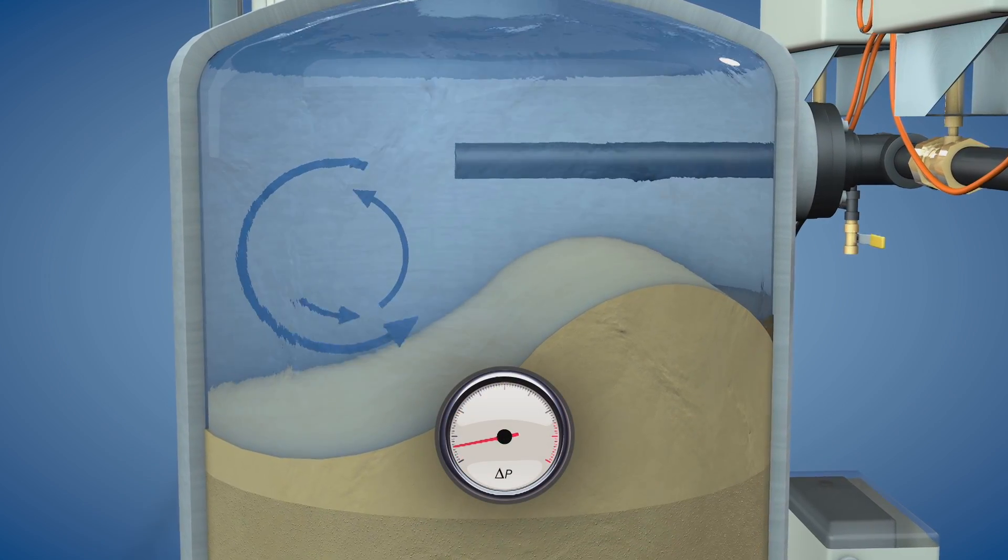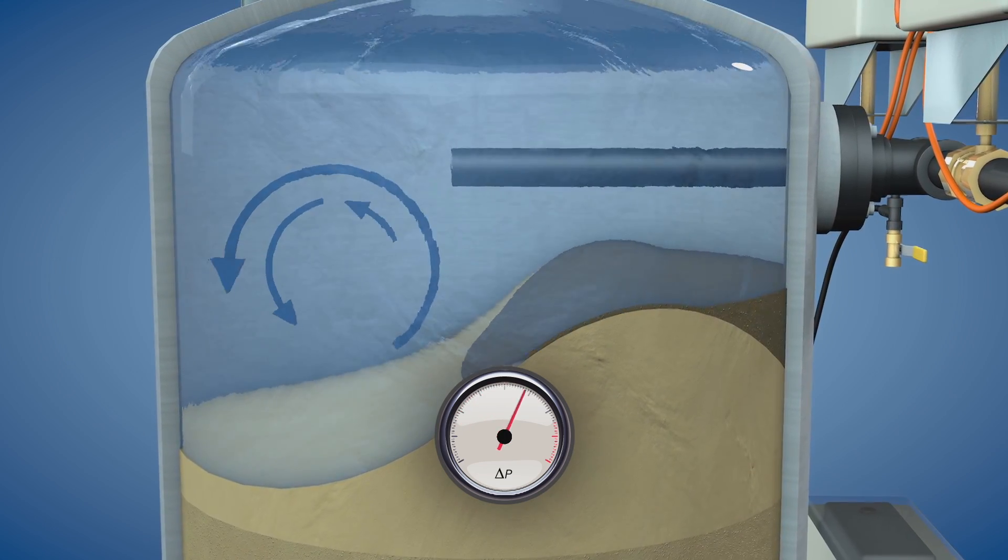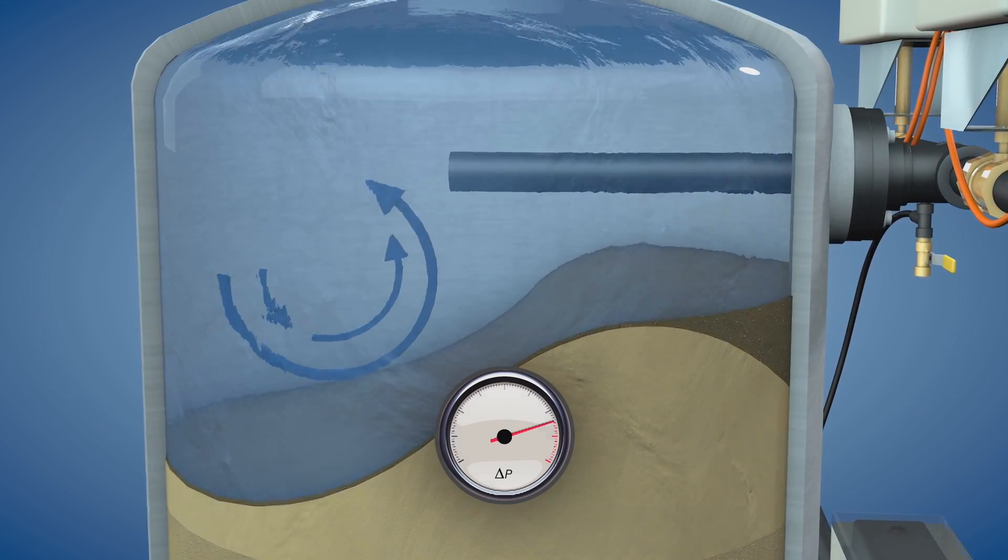Backwash frequency is minimized by storing particulate in the turbulent water above the bed and in the naturally formed storage area close to the inlet nozzle, which leads to higher efficiency of filtration.